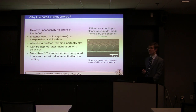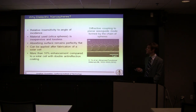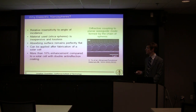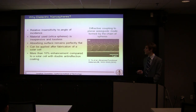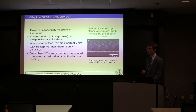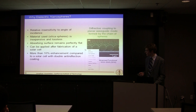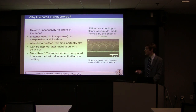So why do we use dielectric nanospheres? One of the reasons is that due to the spherical shape, we can expect them to be relatively insensitive to the angle of incidence. The material used — in this case silica spheres — is lossless, so we avoid parasitic absorption. It's inexpensive, made of silica. The absorbing surface remains perfectly flat, which is an advantage for high electrical properties. It can be applied after cell fabrication on a finished solar cell. And I will show that we can expect more than 10% enhancement compared to a solar cell which already has an optimized anti-reflection coating.